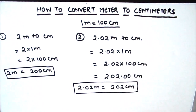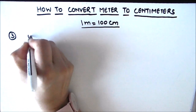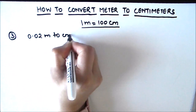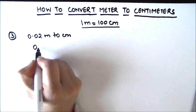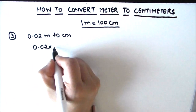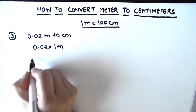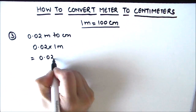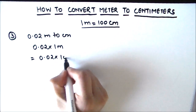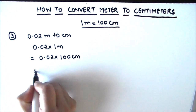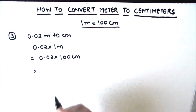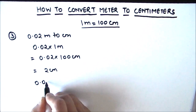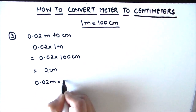Now let's move on to the next example. We need to convert 0.02 meters to centimeters. We write 0.02 meters as 0.02 times 1 meter, and in place of 1 meter we write 100 centimeters. So that's 0.02 times 100 centimeters, and when we multiply these two numbers we get 2 centimeters. So 0.02 meters is equal to 2 centimeters.